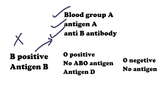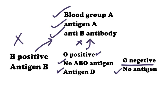In the case of O positive blood, there is no ABO antigen but it has Antigen D. So if the patient is already sensitized to the RH antigen, there will be clumping. But if the patient has not yet developed anti-D antibody, O positive blood can be transfused, though it will trigger the development of anti-D antibody within the patient's body. So the best option is O negative, because it has no ABO antigen and it will not trigger the development of anti-D antibody.